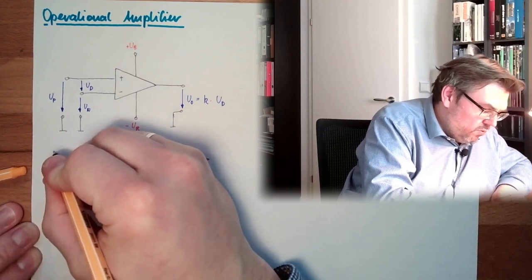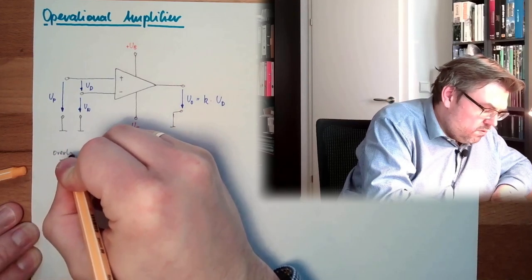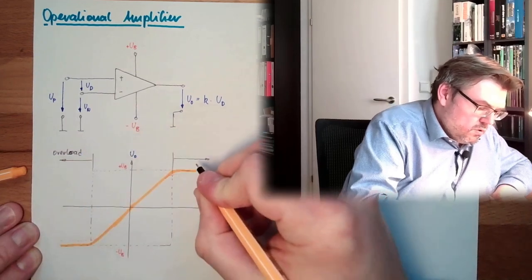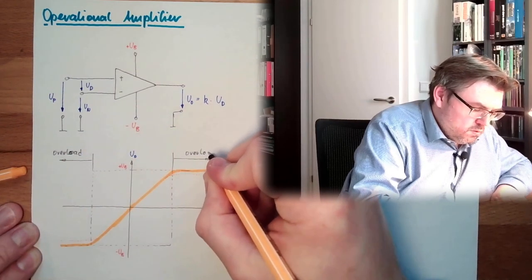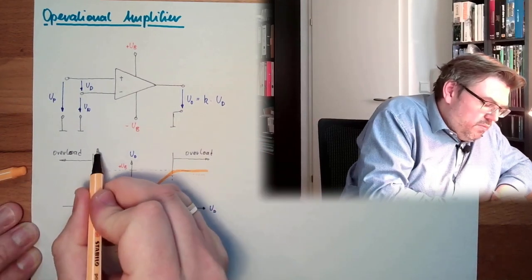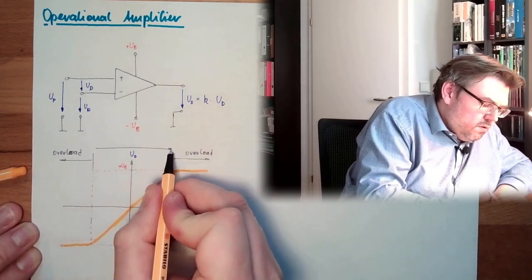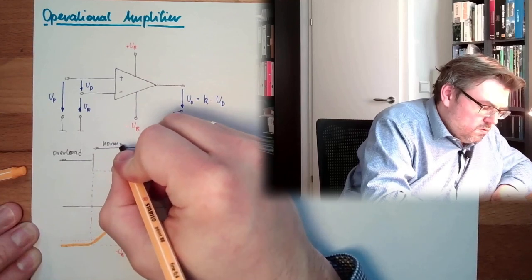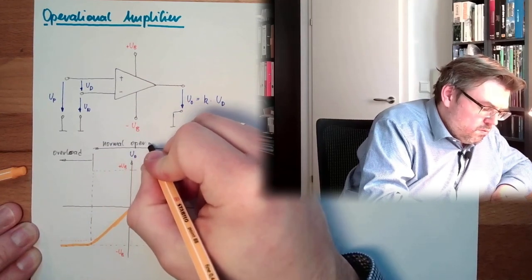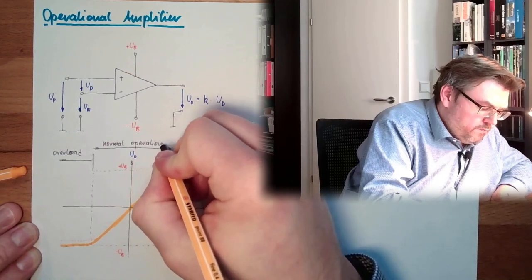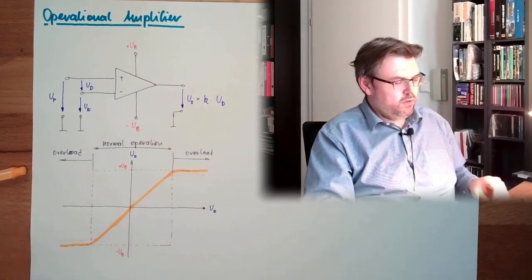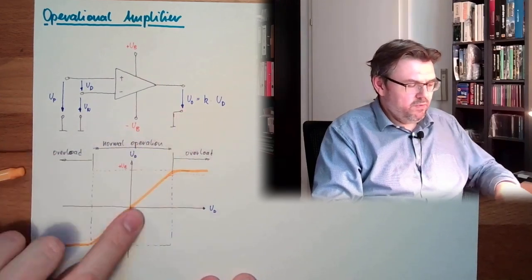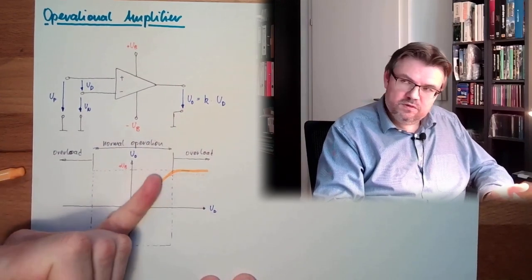Here we have an overload, overload. And in between, we have a normal operation. So here, this fits, UO equals K multiplied by UD. The K is the steepness of this thing.